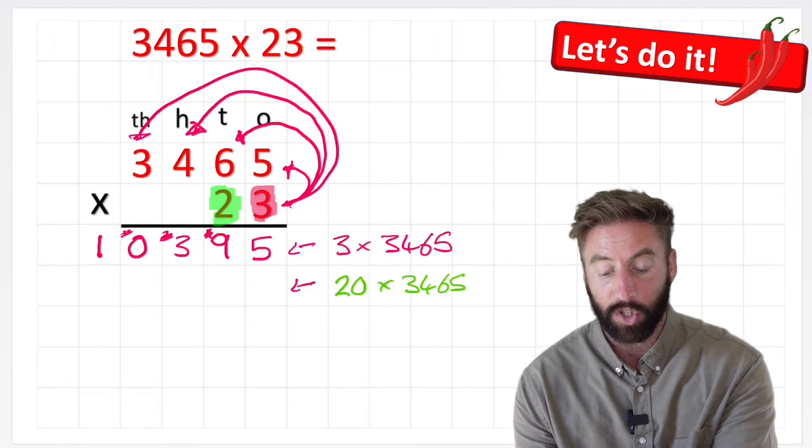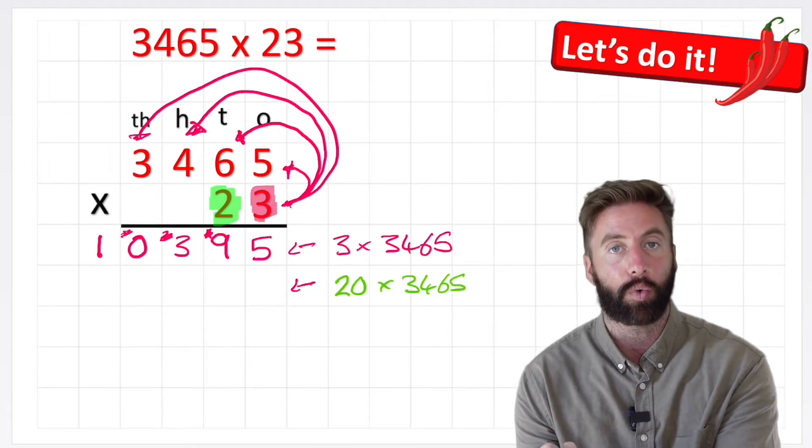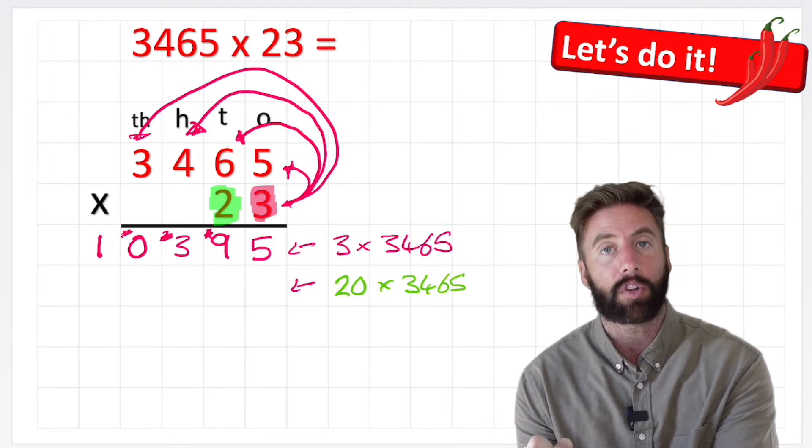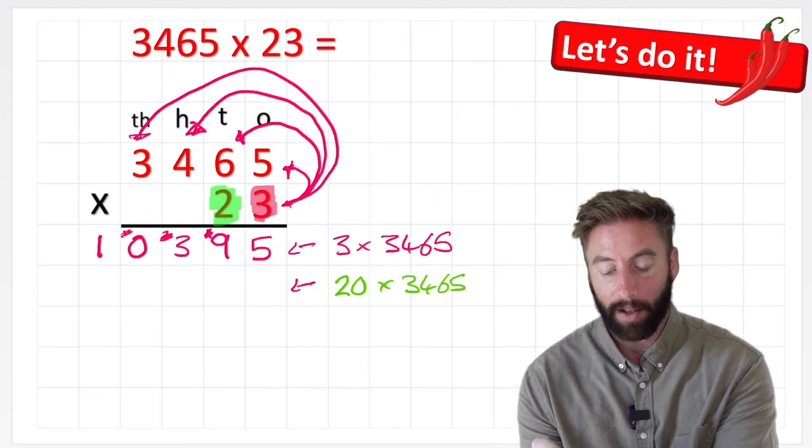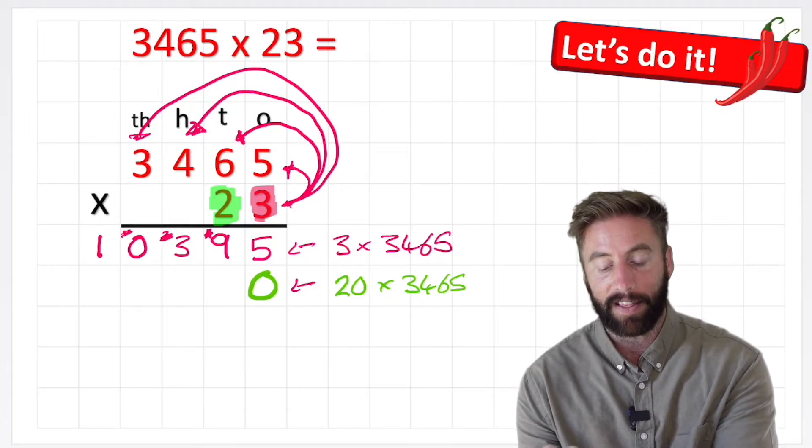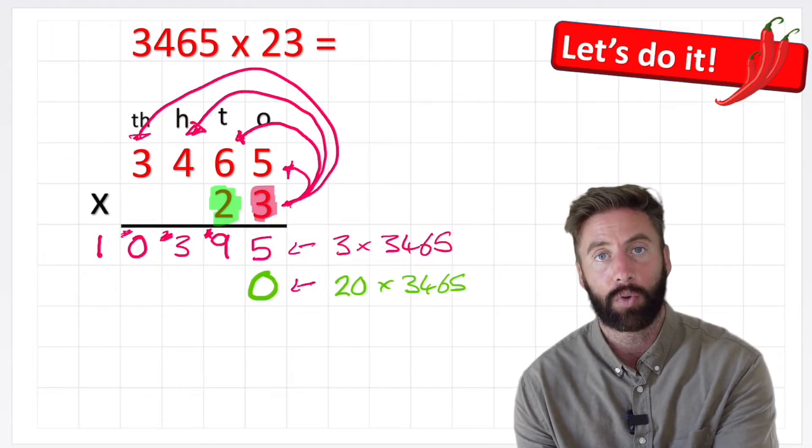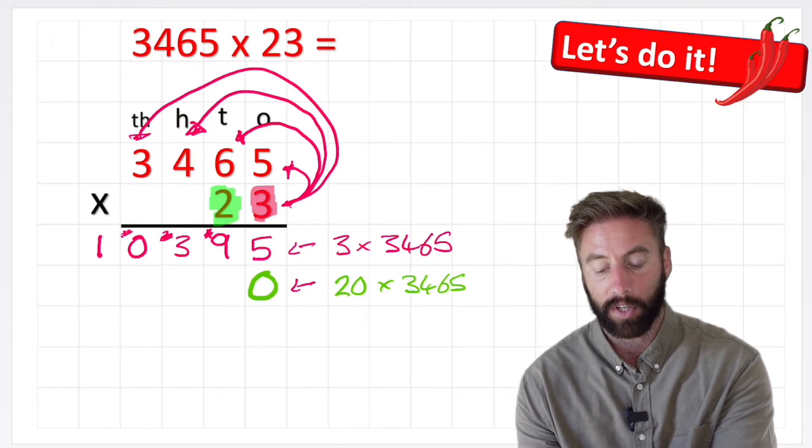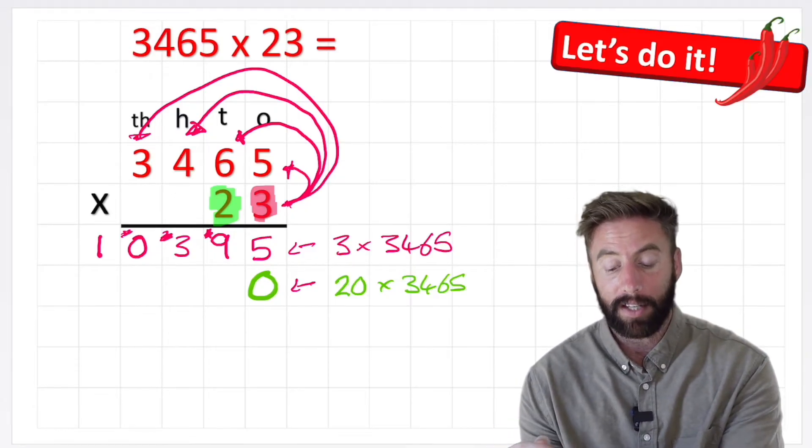Now I'm ready to look at my next row, which is 20 times 3465. But I want to just look at this 2 as a 2. It's very difficult to think about multiplying by 20 every time, so how can I do that? Well, if I put a 0 here, I am making everything in this row 10 times larger, which means I can then just think of this 2 as a 2 instead of a 20. So we call this little 0 a placeholder.